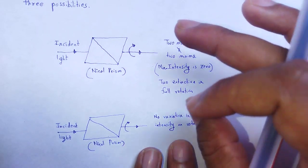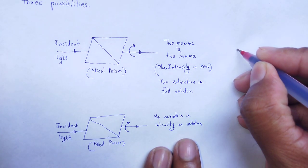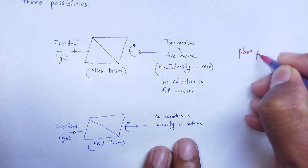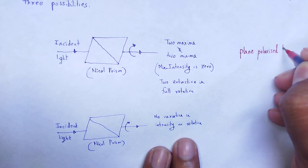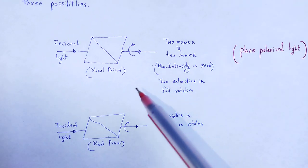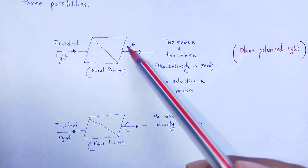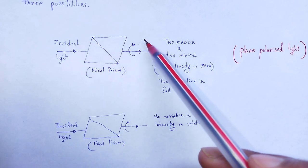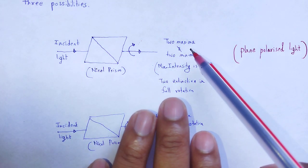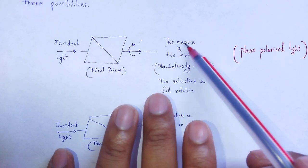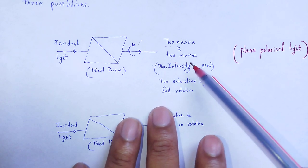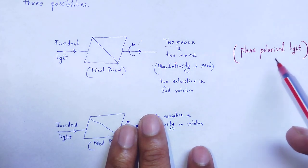If we see variation in intensity with two maxima and two minima under full rotation, and that minimum intensity is totally zero, then we can say the nature of that polarized light is plane polarized light. Under full rotation of the analyzer prism, if the transmitted light shows two maxima and two minima with minimum intensity totally zero, then the nature of the incident light is plane polarized light.